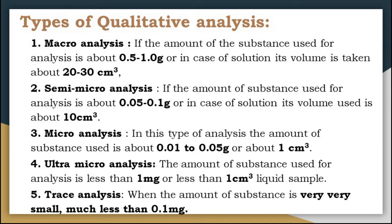The next type is ultra-micro analysis, and the fifth is trace analysis. In both analyses, the amount of substance used is very small — less than 1 mg for ultra-micro analysis, and less than 0.01 mg for trace analysis. Both analyses can be done by the micro crystallographic method or drop method, and both are useful in research and development.